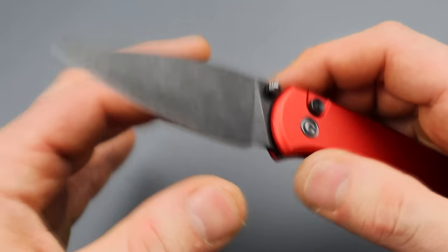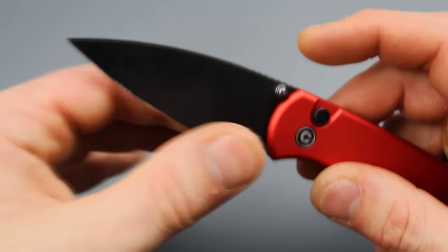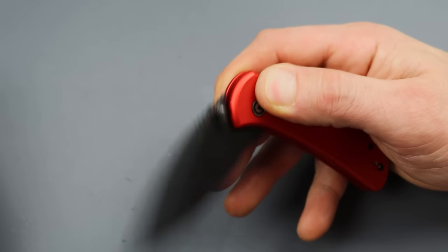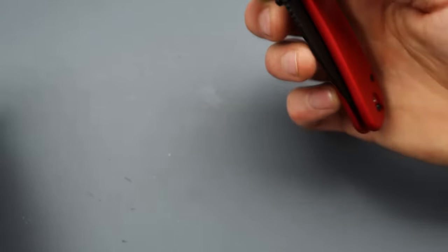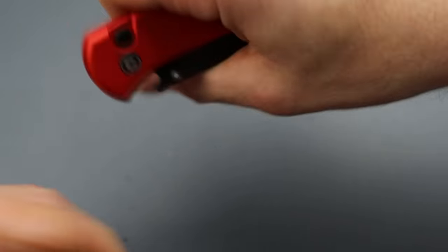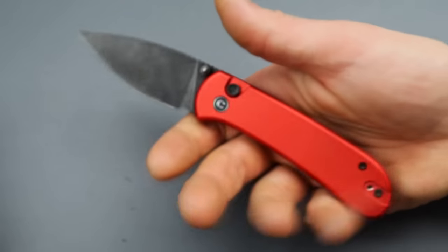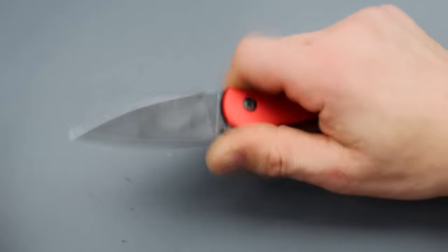And, then, you have a full flat grind that gets down to like. I think mine started out at like 9, 10,000ths behind the edge. Now, it's probably a little bit thicker. But, still very, very thin. You technically can use this as a bottle opener. Aluminum handles make this thing extremely, extremely lightweight. So, that's the way I've been carrying it.